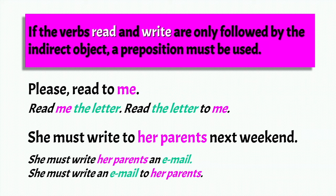Another example: She must write to her parents next weekend. She must write her parents an email, for example — so her parents is the indirect object, direct object is email. Or you can say she must write an email to her parents — to her parents is your indirect object.